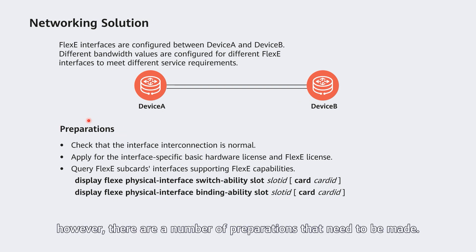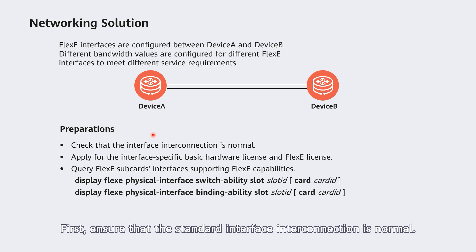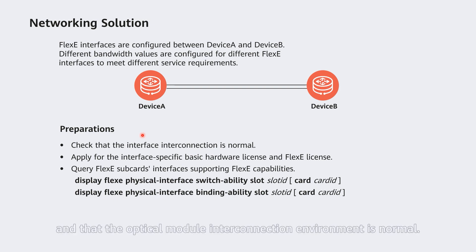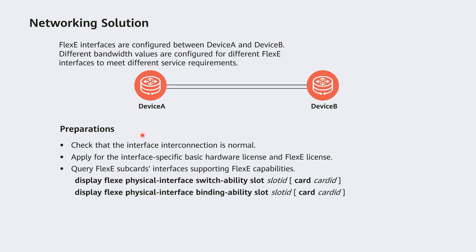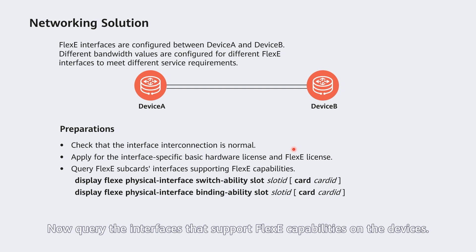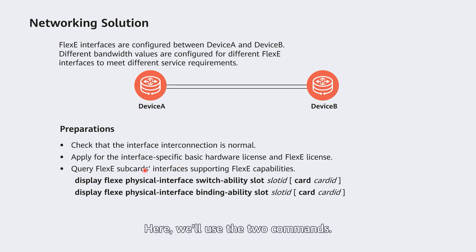Before configuration, a number of preparations need to be made. First, ensure that the standard interface interconnection is normal — for example, check that the boards successfully register and that the optical module interconnection environment is normal. Next, prepare the interface-specific basic hardware license and flexi license for the corresponding boards.